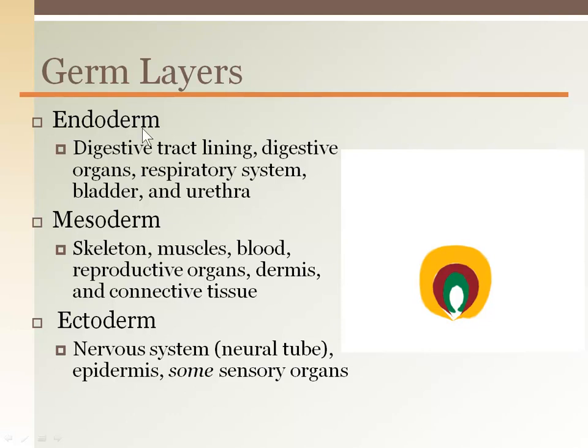The inner tube is the endoderm, which becomes the GI tract and surrounding organs. The top of the tube will become the mouth, going back to the anus. The next layer, the mesoderm, will form the musculoskeletal system, reproductive organs, and connective tissues.